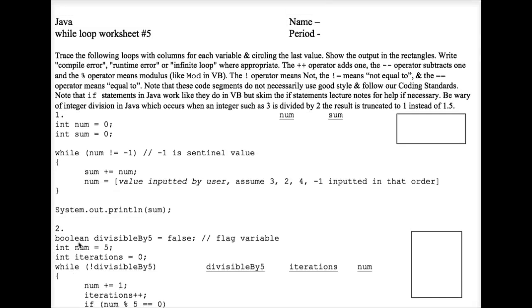A little help with Java while loop worksheet number 5. Num and sum are initialized to 0. I'll be sure to read the directions at all times. Okay, num not equal to negative 1. Negative 1 is the sentinel value. Eventually the user inputs a negative 1 here. We're all agreeing on that.